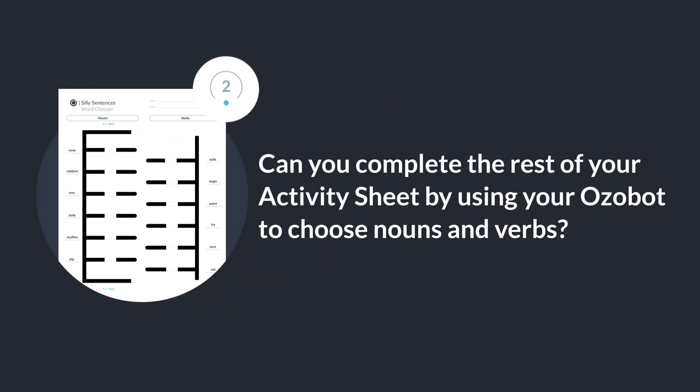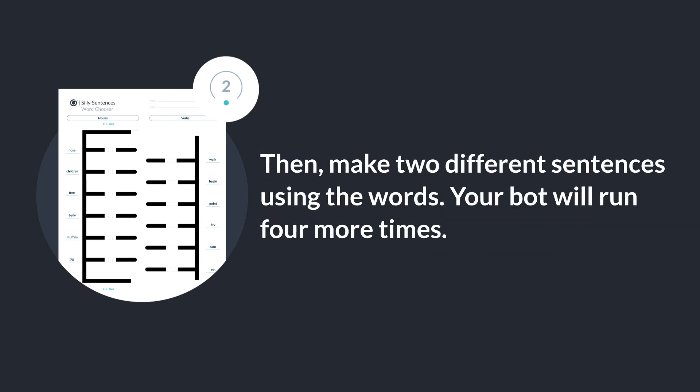Can you complete the rest of your activity sheet by using your Ozobot to choose nouns and verbs? Then make two different sentences using the words. Your bot will run four more times.